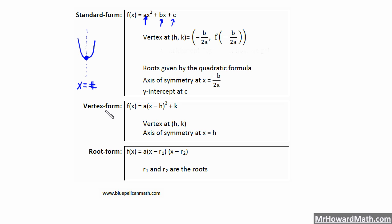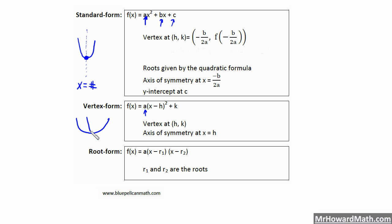Next, vertex form is A times the quantity X minus H, all squared, plus K. X and Y are variables. A is going to be our steepness factor. The K value is the Y coordinate of our vertex, and H is the X coordinate of the vertex. That's why it's called vertex form — we have the X coordinate of our vertex in H and the Y coordinate in K. The axis of symmetry is at X equals H. A lot of students forget the steepness factor A out front — we must have it to determine whether the parabola is really wide or really narrow.